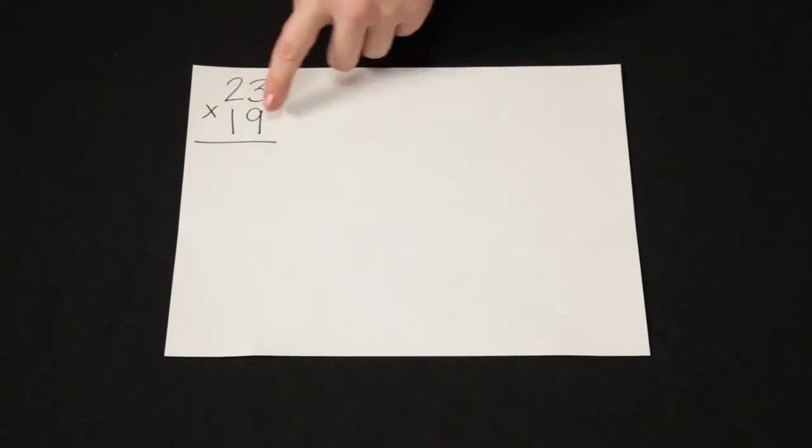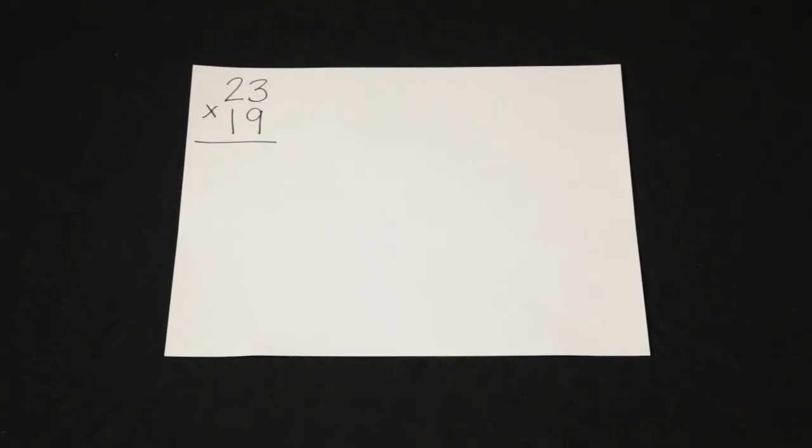I can use lattice multiplication to multiply 23 times 19. The first thing I need to do with lattice is actually set up the area where I'm going to do my multiplication.